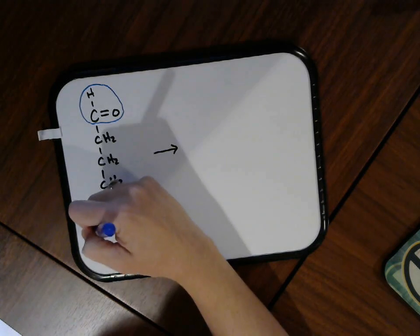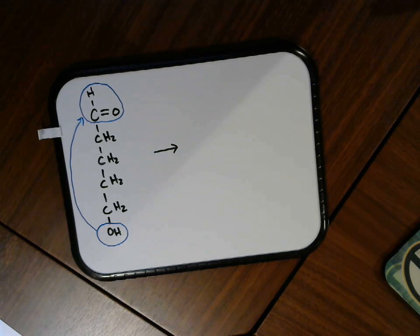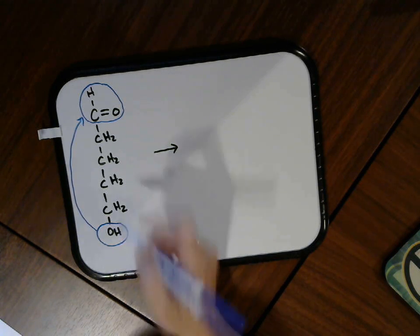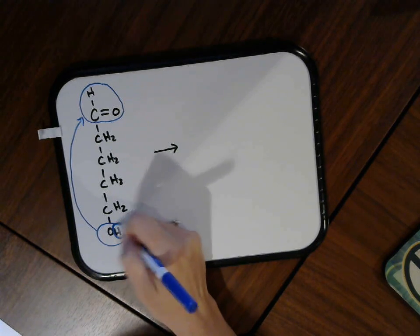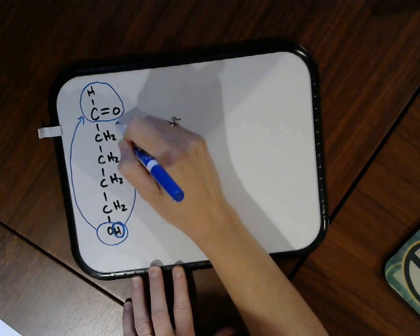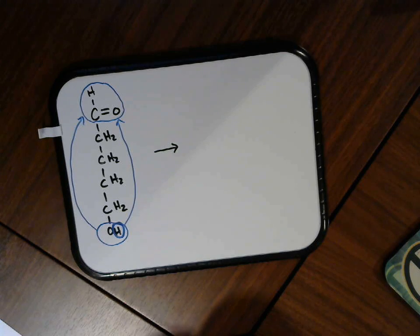So what can happen here is we can have this hemiacetal formation between the two ends of the molecule, which if you can imagine, will bring those two ends together and we're going to make a circle or a ring right here. So if I go through the reaction conditions like before, remember your hydrogen that's on your alcohol is going to come and attach to the oxygen that was on the carbonyl.